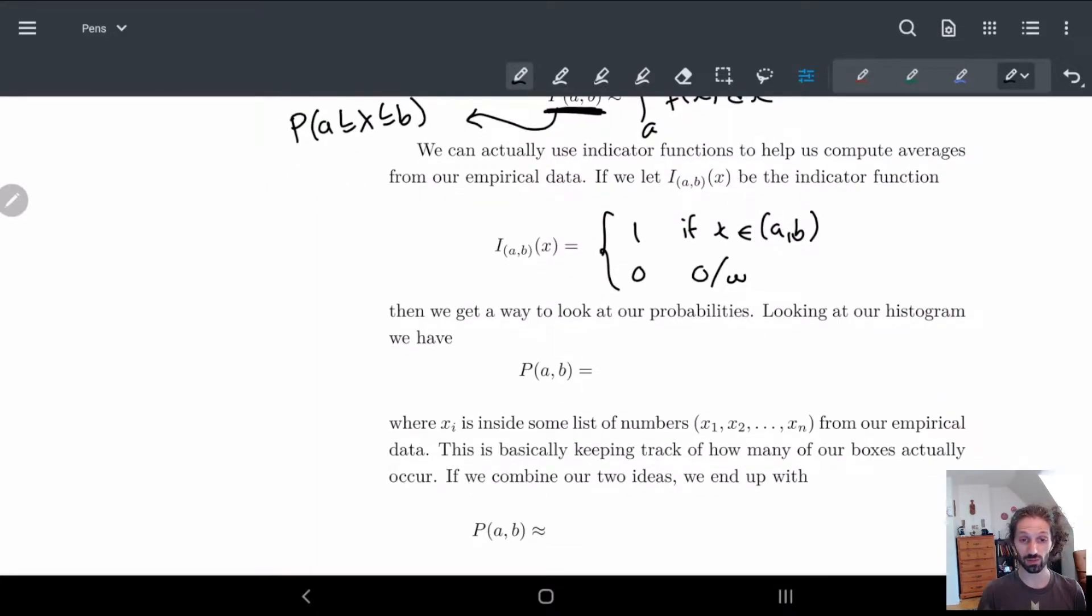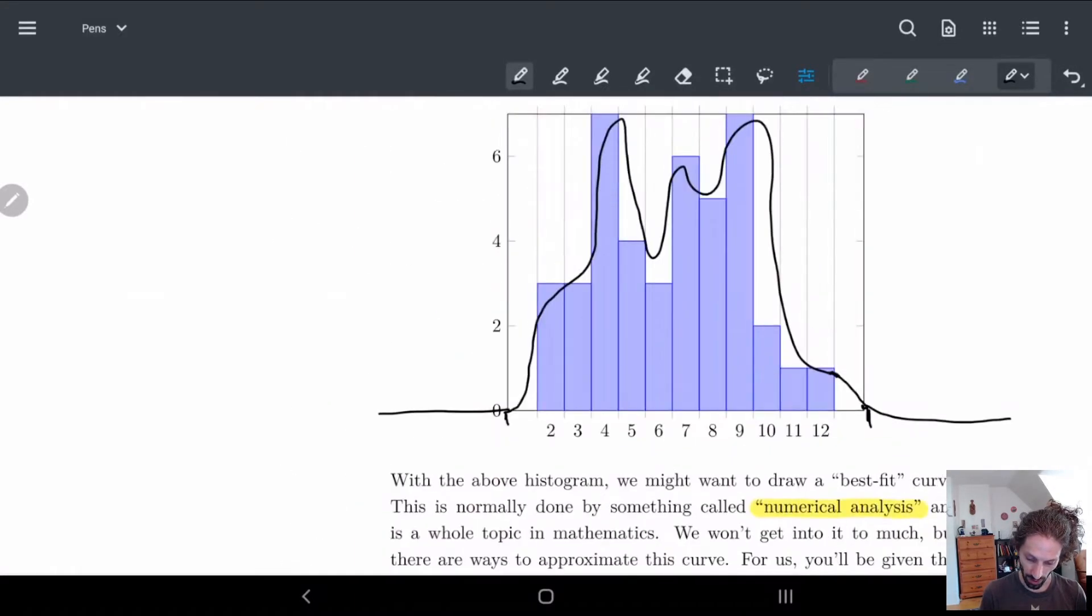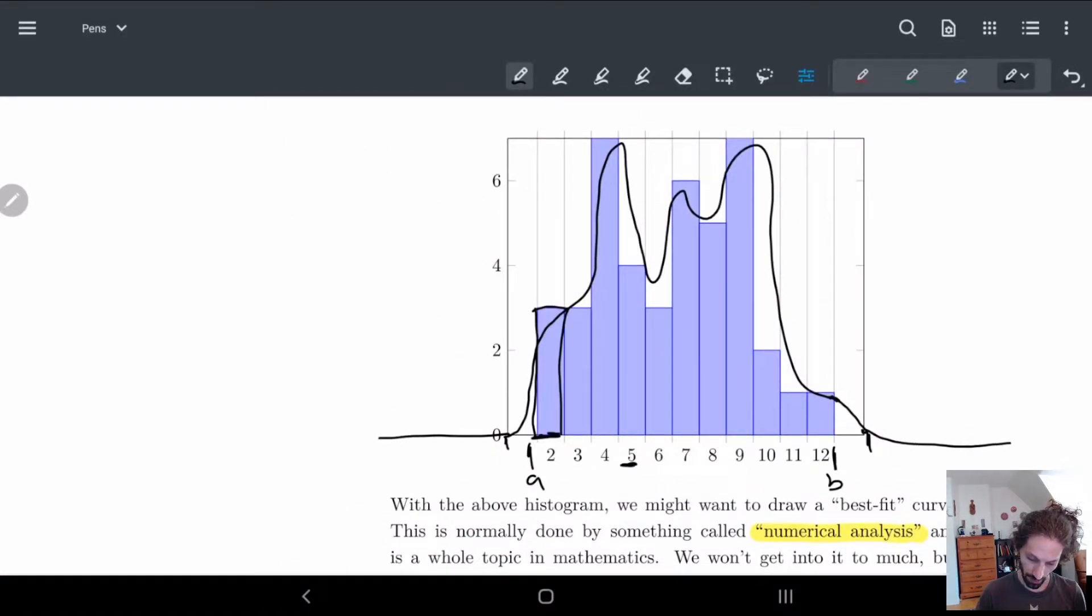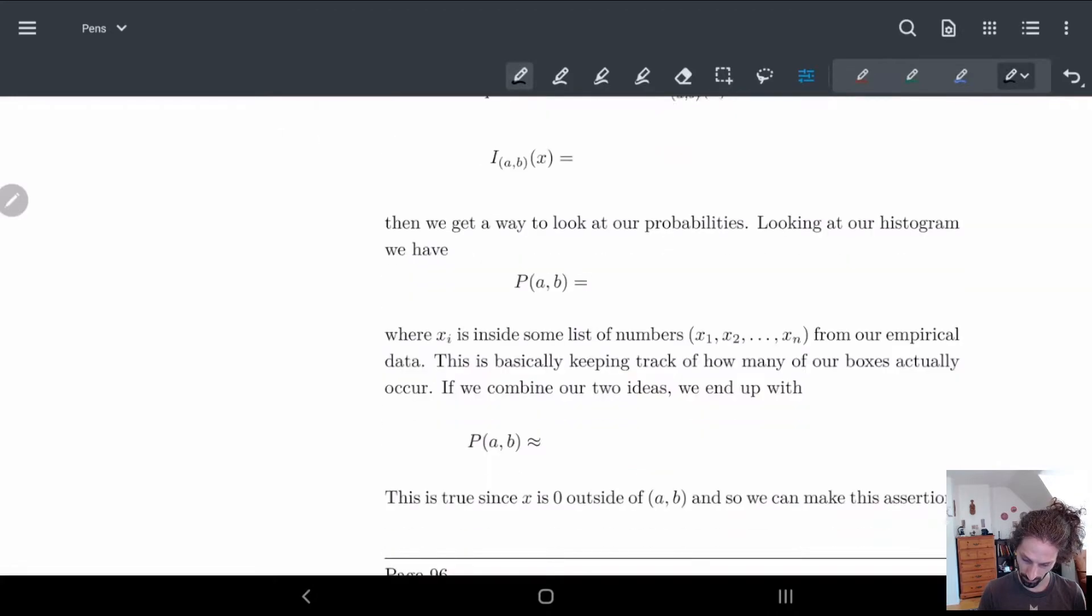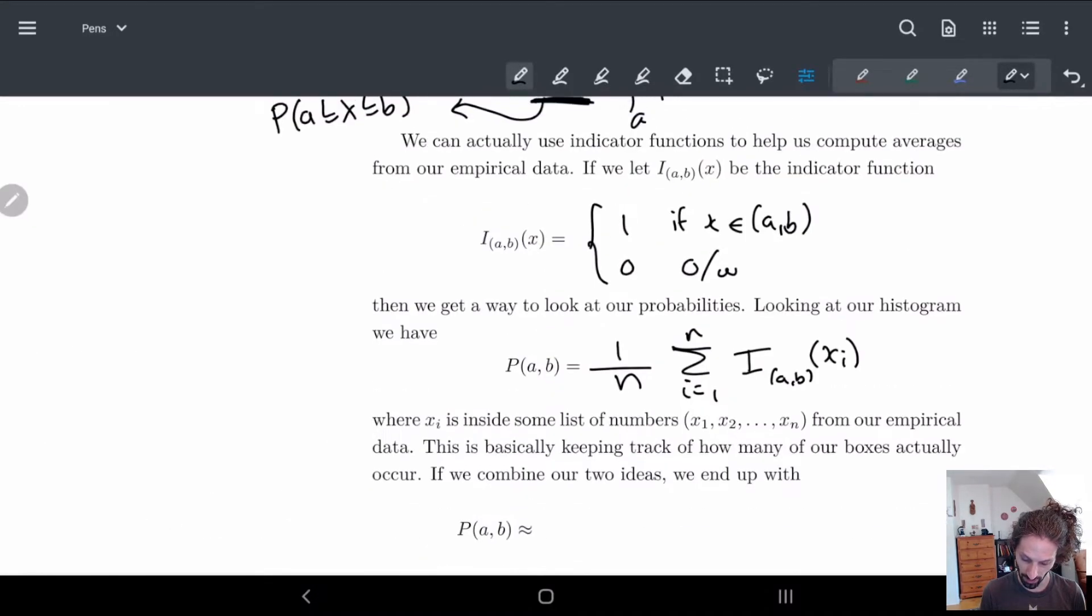And what this gives us in a discrete sense is literally so we take all the possible numbers and we sum over 1 over n and we sum over each of these possibilities, each of the x_i in this case. So for example in our case here x_i might be 5 and so we would have 4 for x_i.